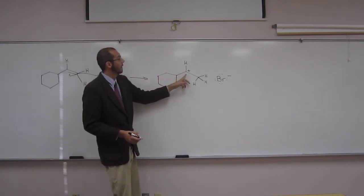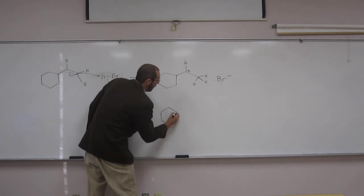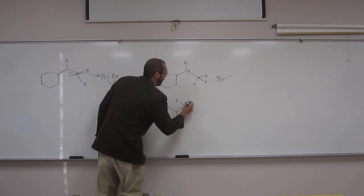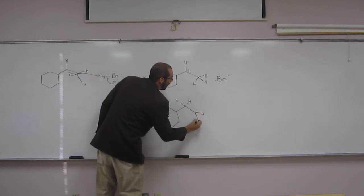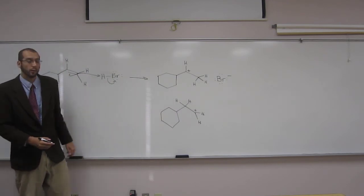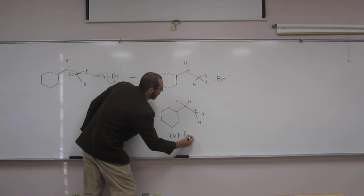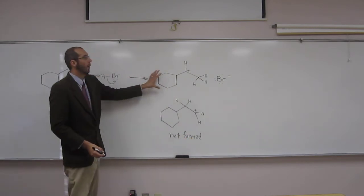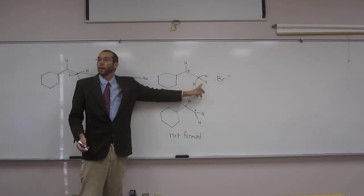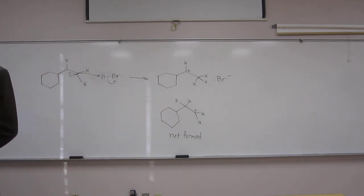Why did we make this carbocation ion instead of this carbocation ion, which was not formed? So this was not formed. Do you remember what we call this when the hydrogen adds to the carbon with the least amount of hydrogens? Do you remember what it's called? Is that Russian guy's name?